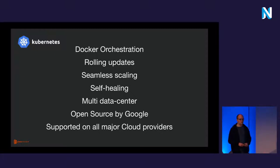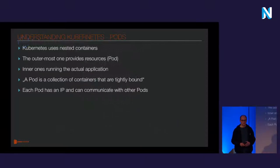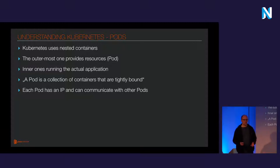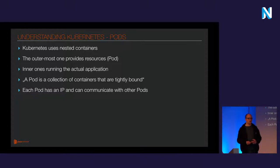Kubernetes is supported by all major cloud providers like AWS, Google Cloud, or Azure, as well as a lot of smaller hosters, and of course you can host it yourself as well. One concept of Kubernetes is called pods. A pod is basically a container — Kubernetes uses nested containers, meaning a pod is the outermost container and your actual application containers run inside it. Kubernetes regularizes things: a container is always running inside a pod, even if it's only a single container. A pod is a collection of containers that are tightly bound — they can communicate with each other, and each pod has an IP.